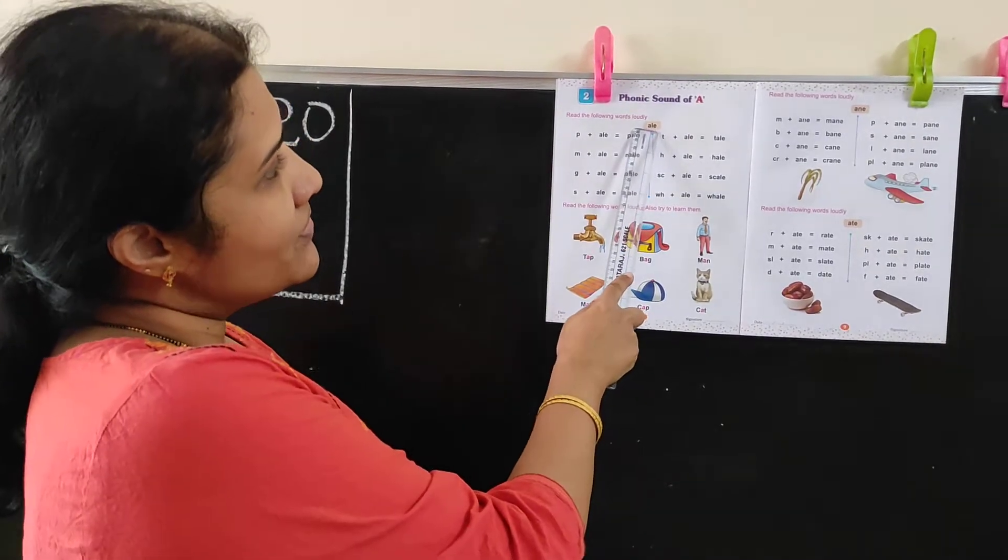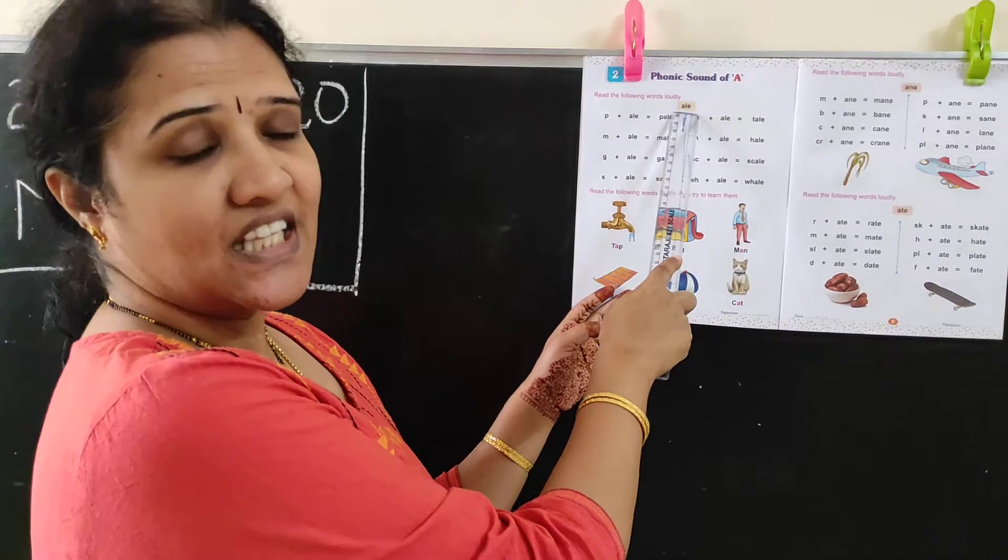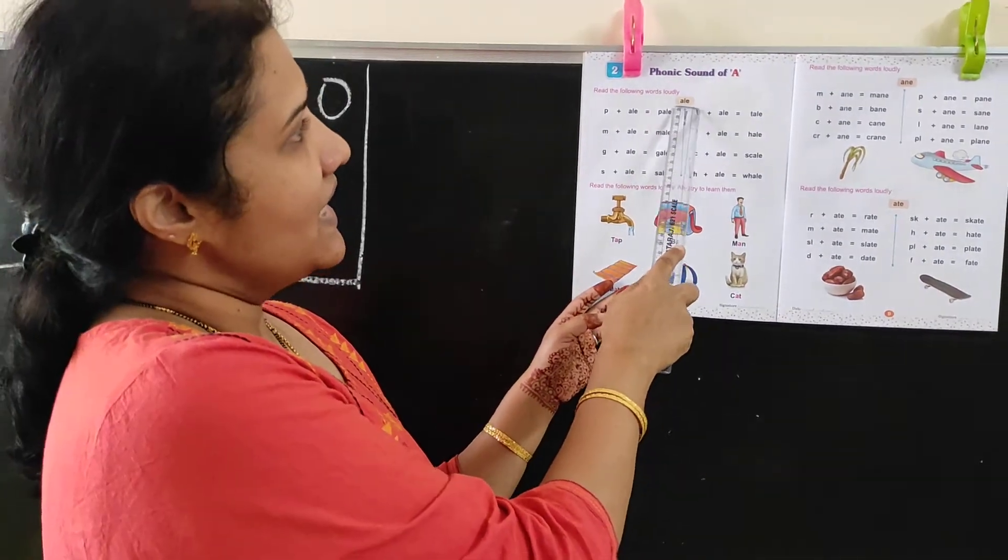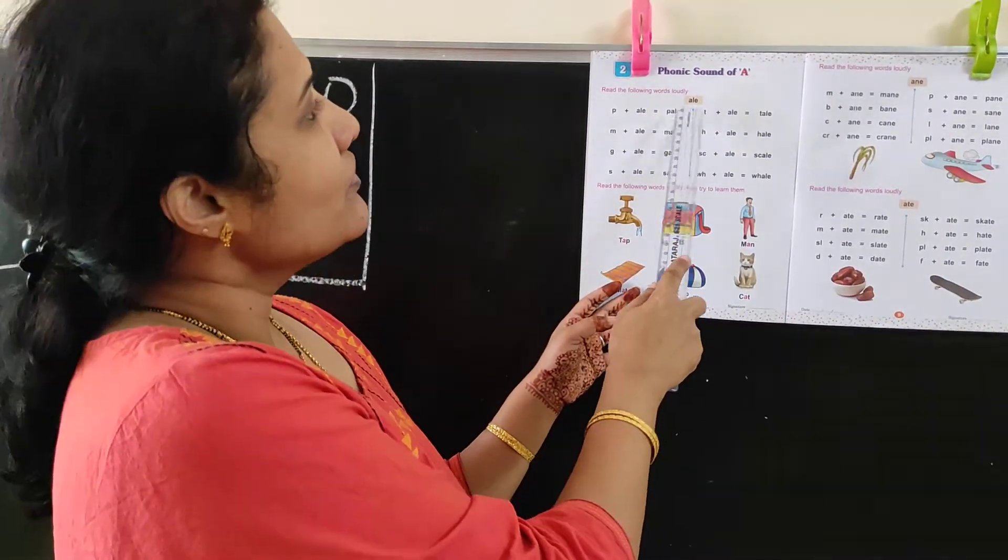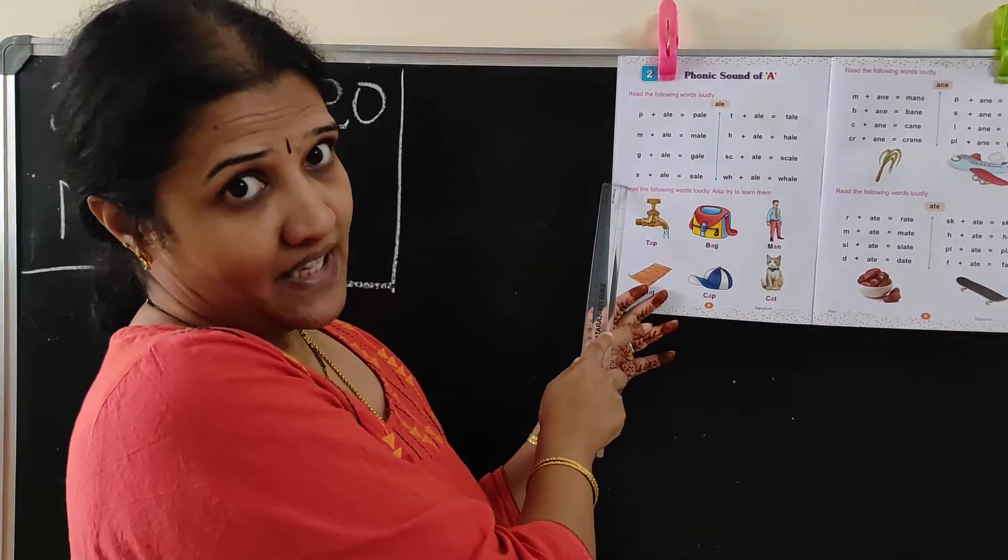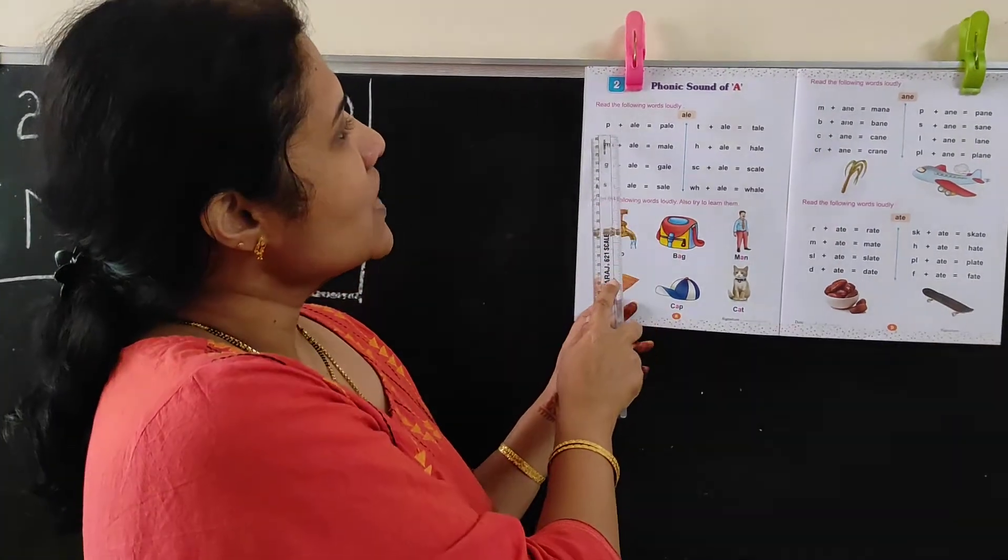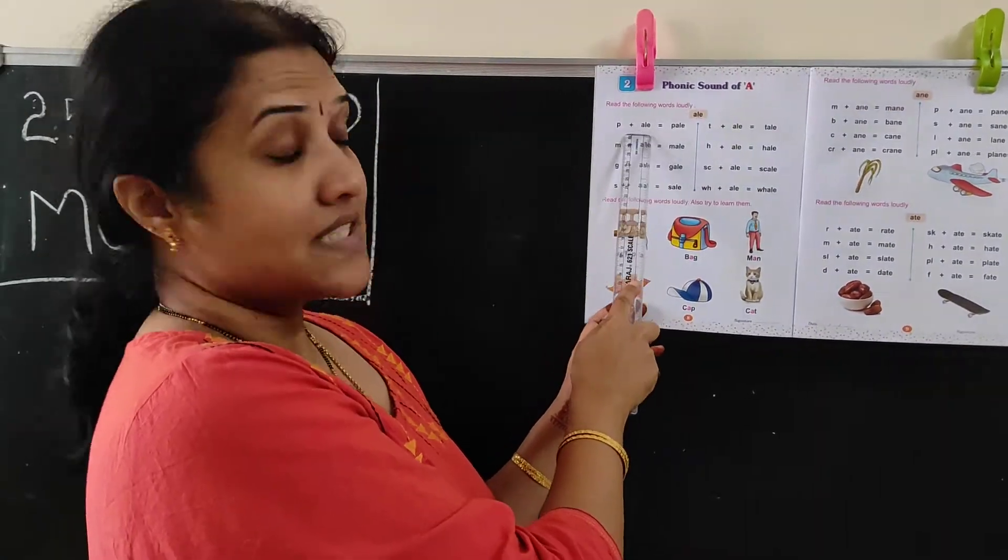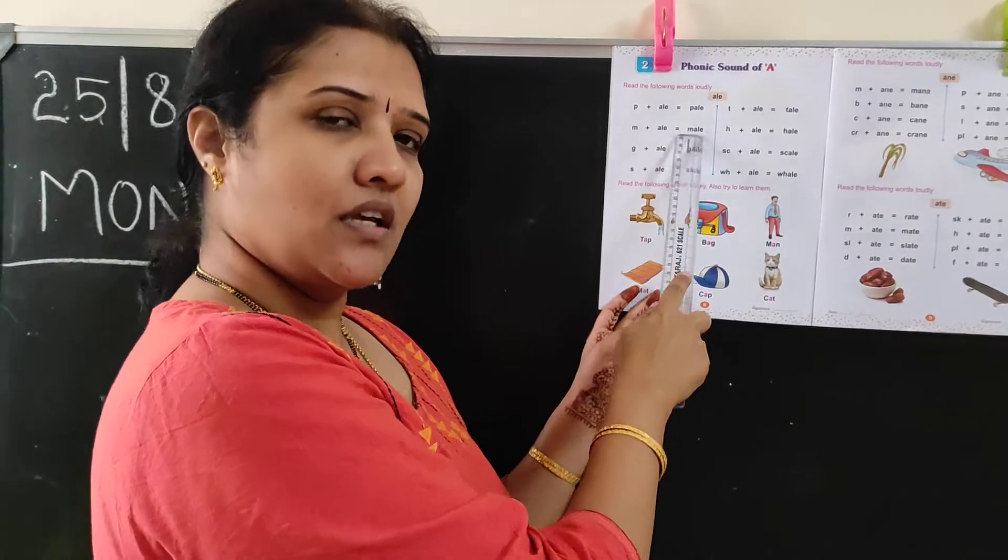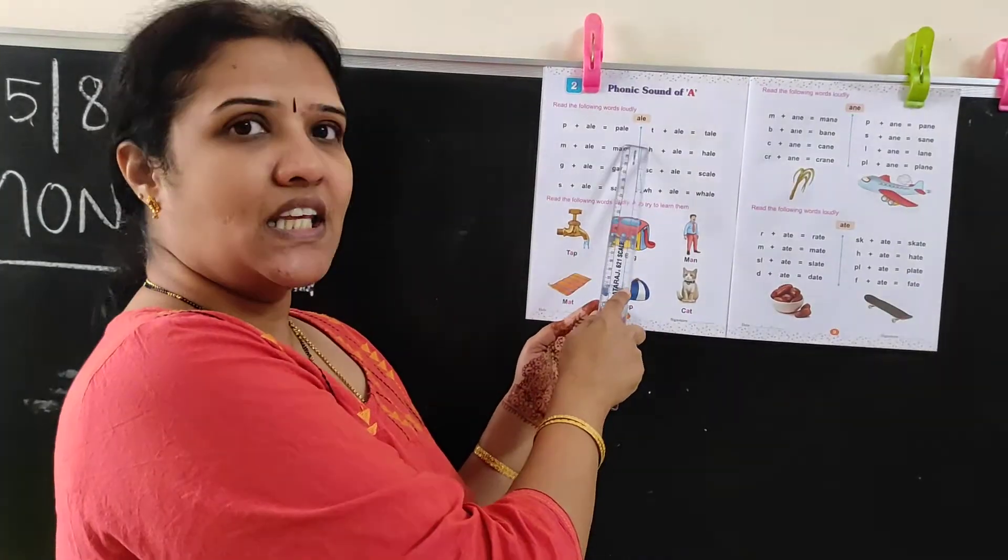So what is the first sound? The first sound is A-L-E. For this A, if you add various alphabets, it will become a word. So T plus A is pale. P-A-L-E, pale.